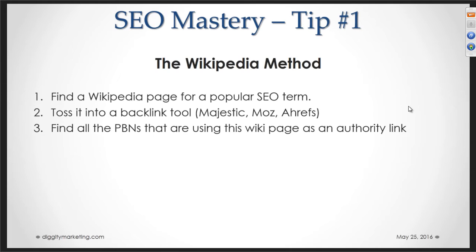Then you're going to find all the PBNs that are using that Wikipedia page as an authority link. We have to remember that it's a common practice on PBNs not to link to all your money sites — you mix in some links to authority sites to hopefully indicate to Google that you're not just a PBN. And still commonly, this is another SEO move, everyone's still using Wikipedia.